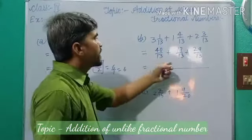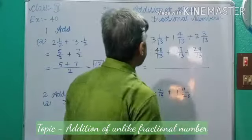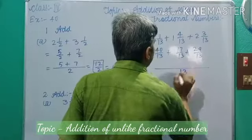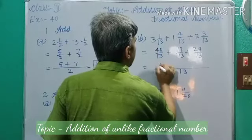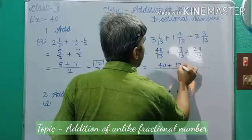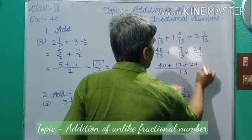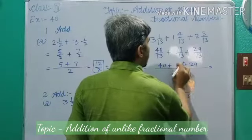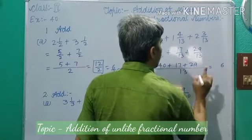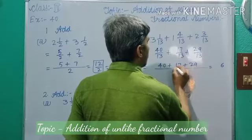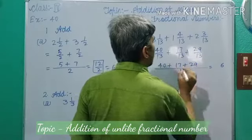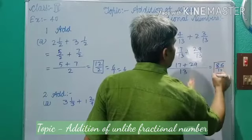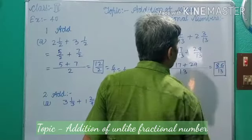Dear students, this fraction is a like fraction. So their LCM is 30. Here, write down 40 plus 17 plus 29 — add the numerators: 9 plus 7 is 16, and continuing the addition gives 86. So 86 by 30 is your answer. This is your final answer.